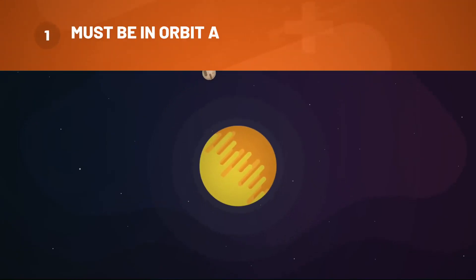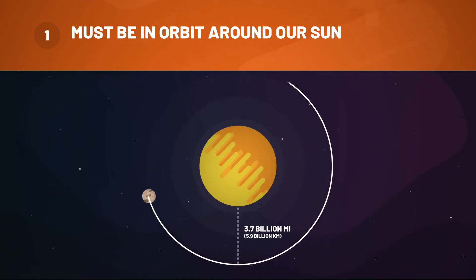Pluto indeed orbits our sun because, like all planets in our solar system, it's locked in the sun's powerful gravity, even though it orbits 3.7 billion miles out.